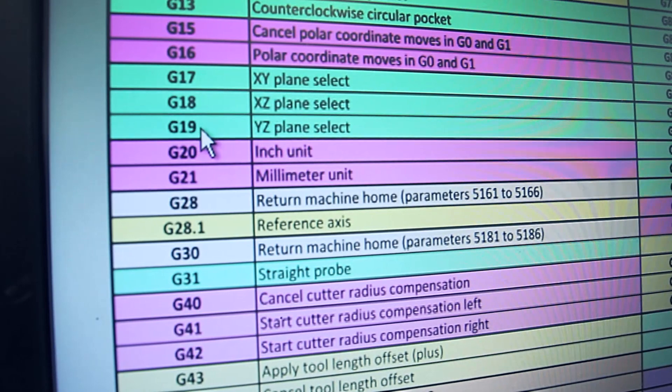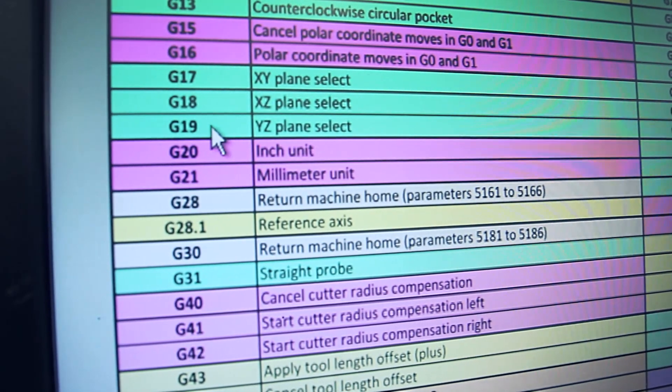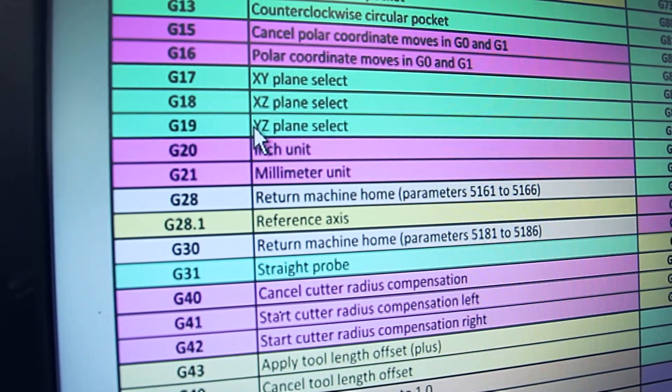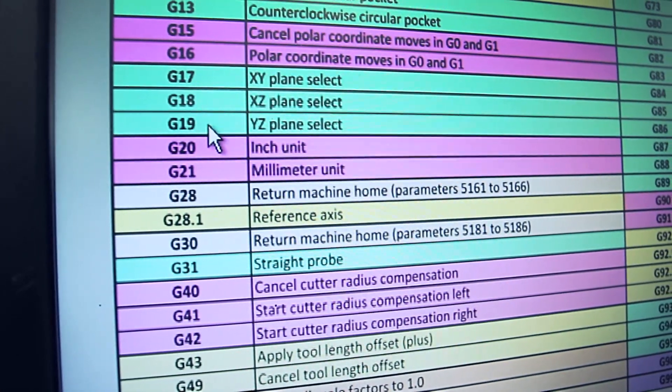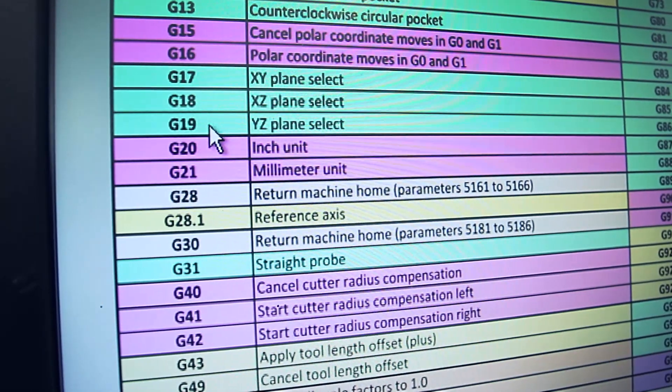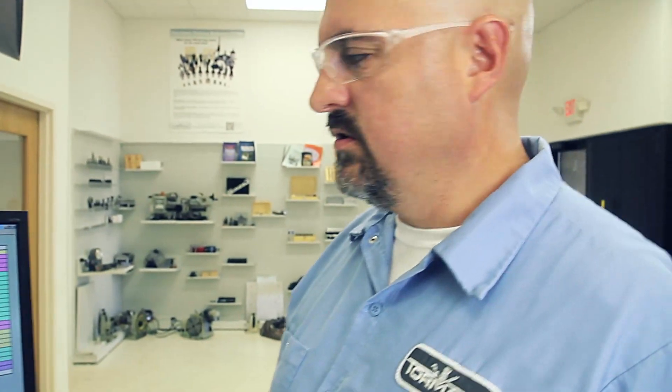For straight line and positioning moves it's not as critical, but if you're going to be doing any type of arcs, your radius centers require that you're in the correct work plane. If you're using CAM software, it should flip it automatically for you.